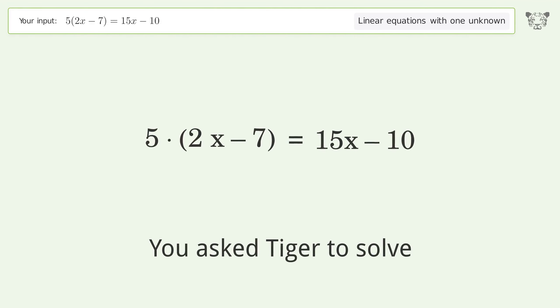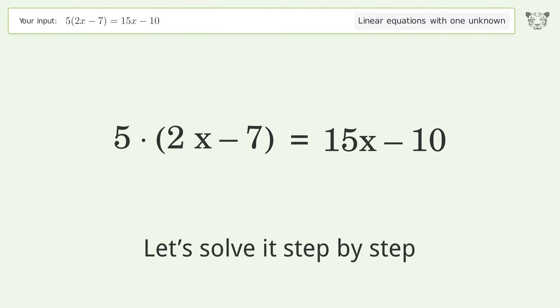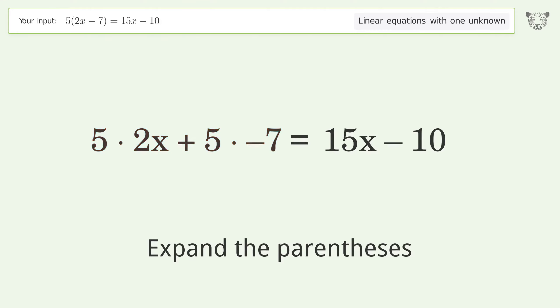You asked Tiger to solve this. It deals with linear equations with one unknown. The final result is x equals negative 5. Let's solve it step by step. Simplify the expression, expand the parentheses, multiply the coefficients.